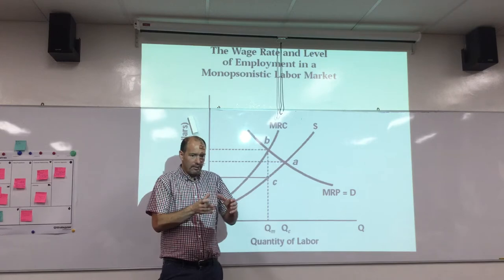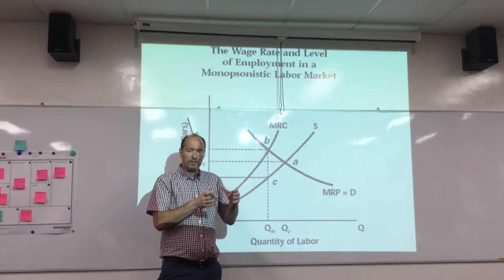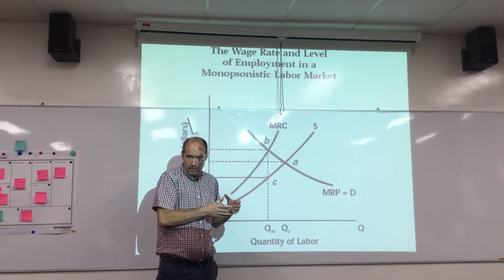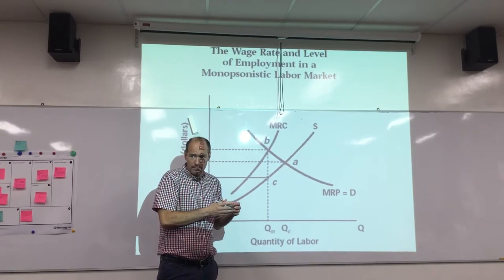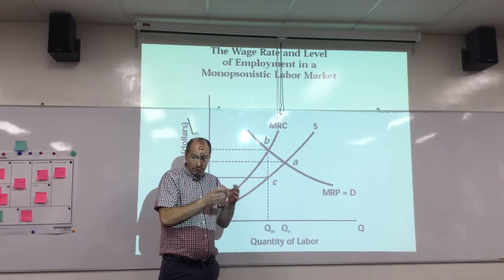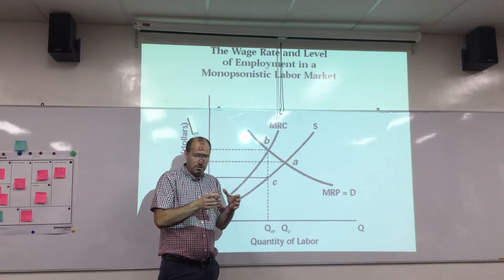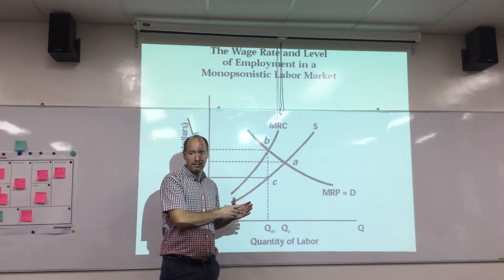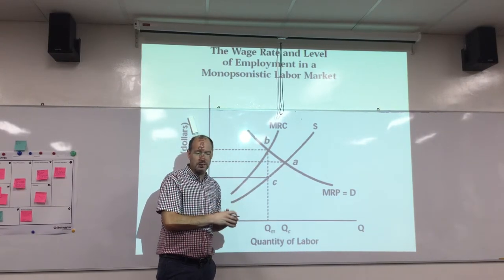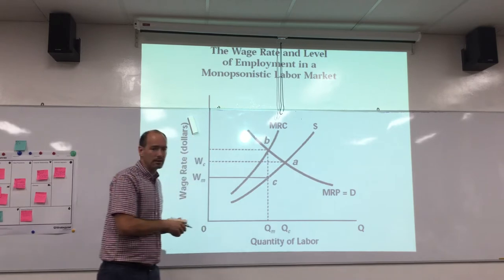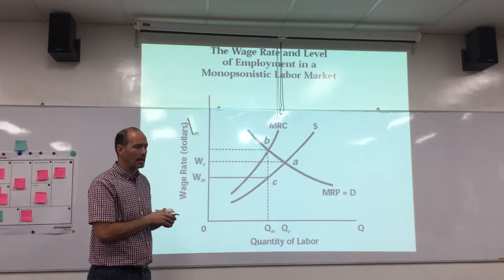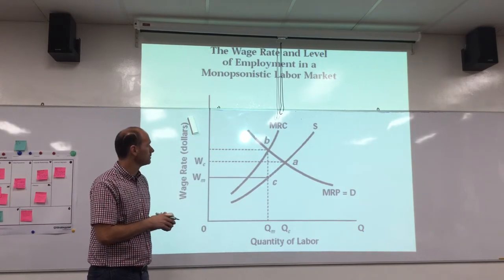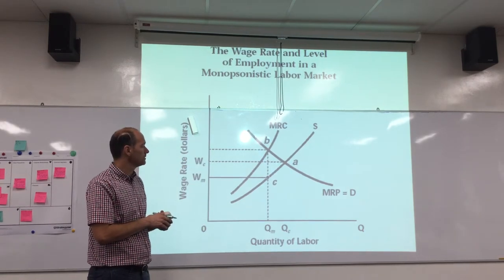So where you have power on the supply side of the labor market, that's when you have unions. And when you have power on the demand side — when the business has some power — that's called monopsony. So we'll discuss those two things.